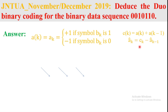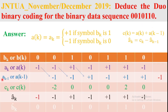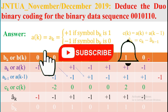The demodulated or detected signal â(k) is equal to c(k) minus â(k-1). Here a(k) is the present input signal and a(k-1) is its previous sample value. The given binary data sequence b(k) is: 0, 0, 0, 1, 0, 1, 0, 1, 1, 0.